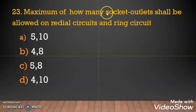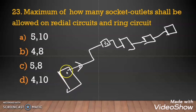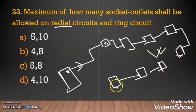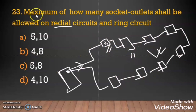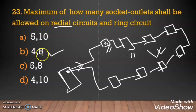Question 23: Maximum number of socket outlets allowed — for the radial circuit, maximum 4 is allowed, and for the ring circuit, maximum 8 is allowed. In a ring circuit, the outlets are looped and return back to the same circuit breaker. For diva regulation, 5 single sockets are allowed in radial and 10 in the ring. But as per ADDC regulation, the correct answer is option B: 4 for radial and 8 for ring.